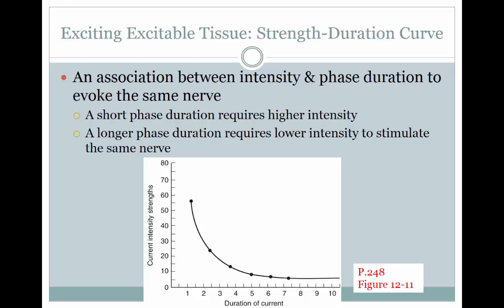There is an association between the intensity of the current and the phase duration of the current, which will evoke different nerve impulses. A short phase duration will require a higher intensity. A longer phase duration requires lower intensity to stimulate the same nerve. This graph can be located on page 248, figure 12.11 within the Starkey text. Because of the capacitative resistance formed by the cell membranes, short pulses or pulse durations are more selective in the nerve fibers stimulated than are pulses having longer durations. Shorter duration currents require an increased amount of current to stimulate the same type of nerve fiber than currents that have a longer duration.